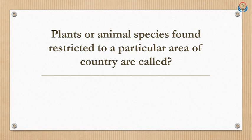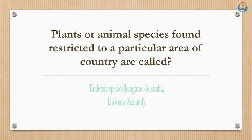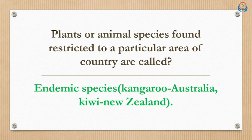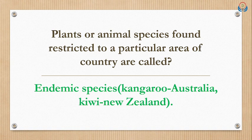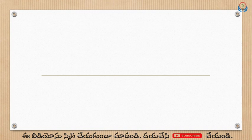Plants or animal species found restricted to a particular area of a country are called endemic species. For example, kangaroo is found in Australia only, and kiwi is found in New Zealand only. So species found only in a particular country or place are called endemic species.